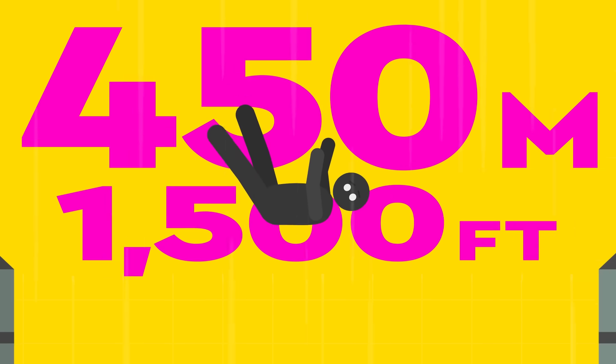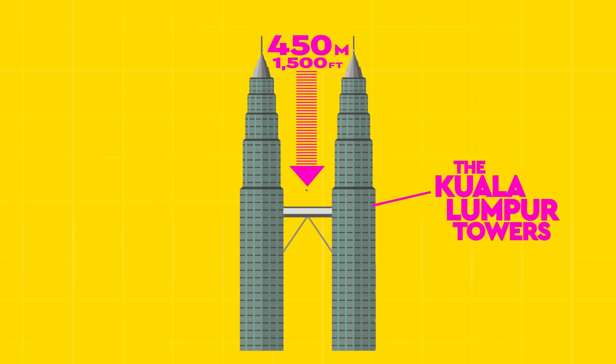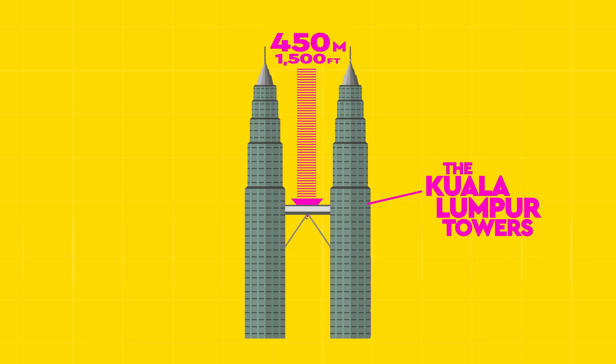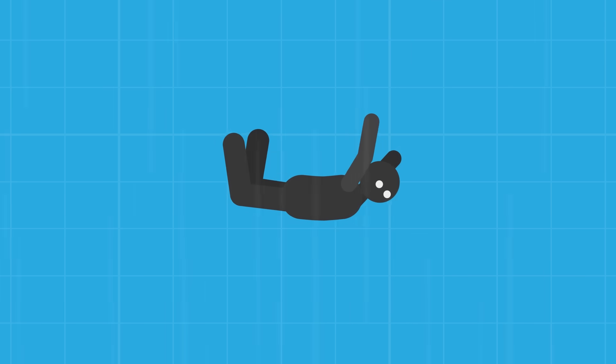This means that it doesn't matter if you've fallen from 450 meters or 1,500 meters. When you hit the ground, you'll do so at the same speed. If you stop suddenly by hitting the ground while you're traveling 200 kilometers per hour, it's fair to say your chances of survival are practically zero.